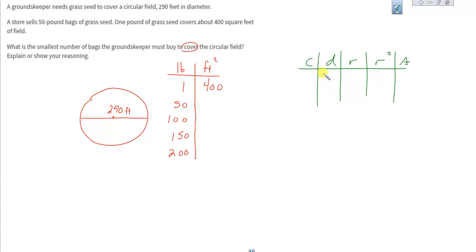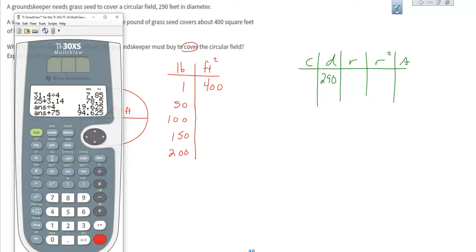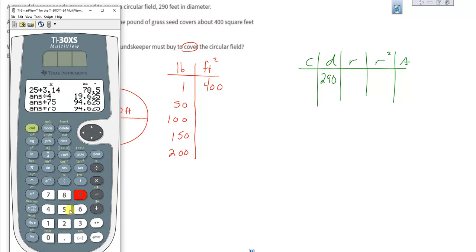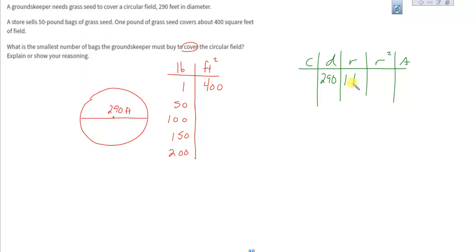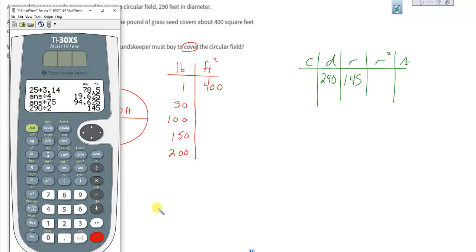What do we know about the circle? We know that its diameter is 290, which puts its radius at half that size. So let's cut that in half: 290 cut in half gives me 145 radius. Let's square that bad boy, 145 times 145.